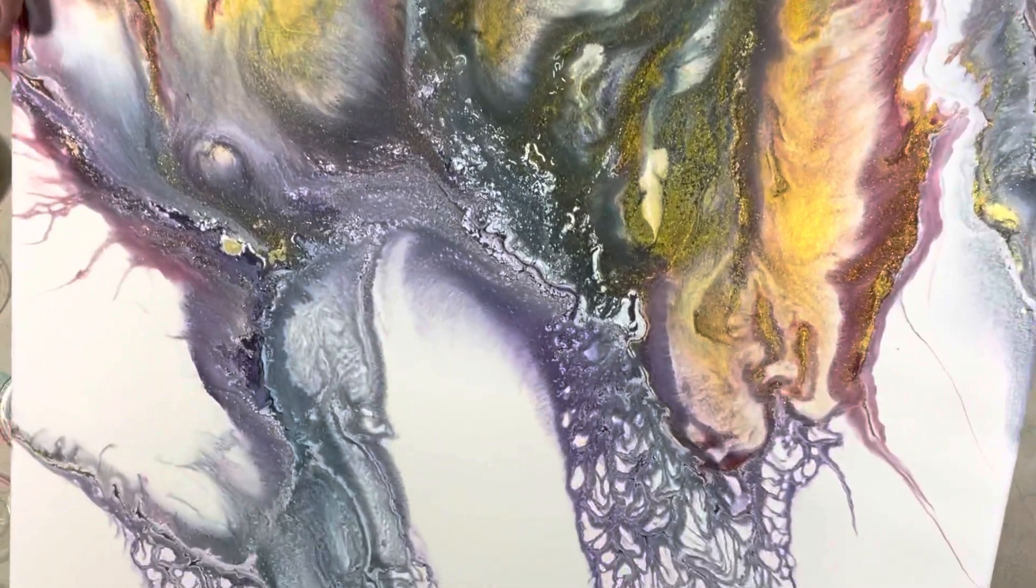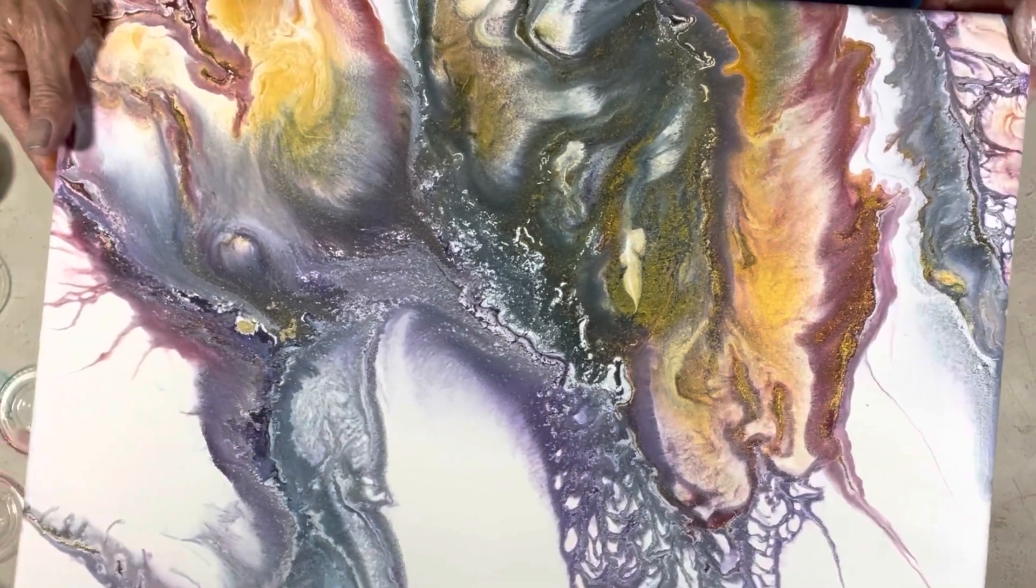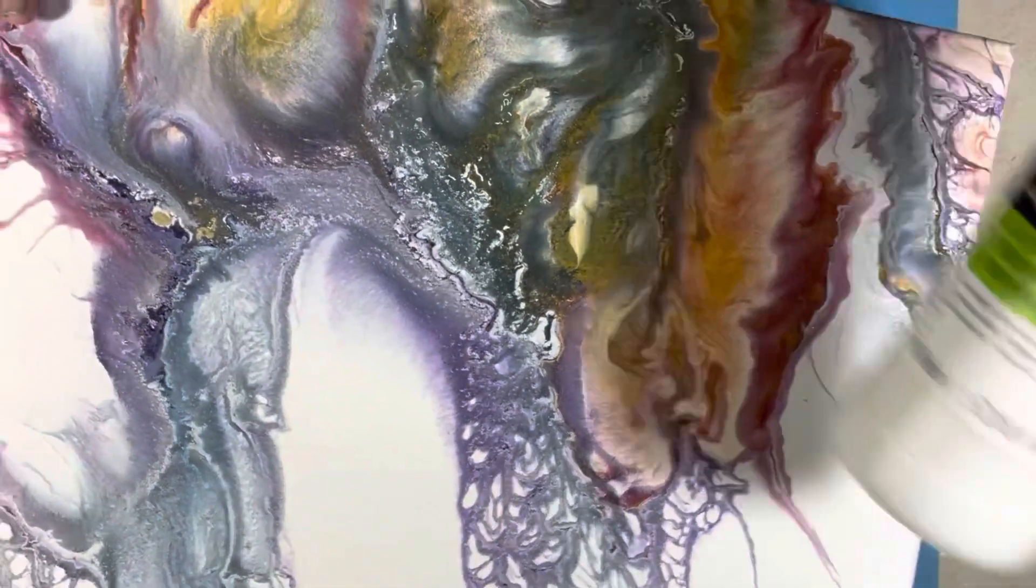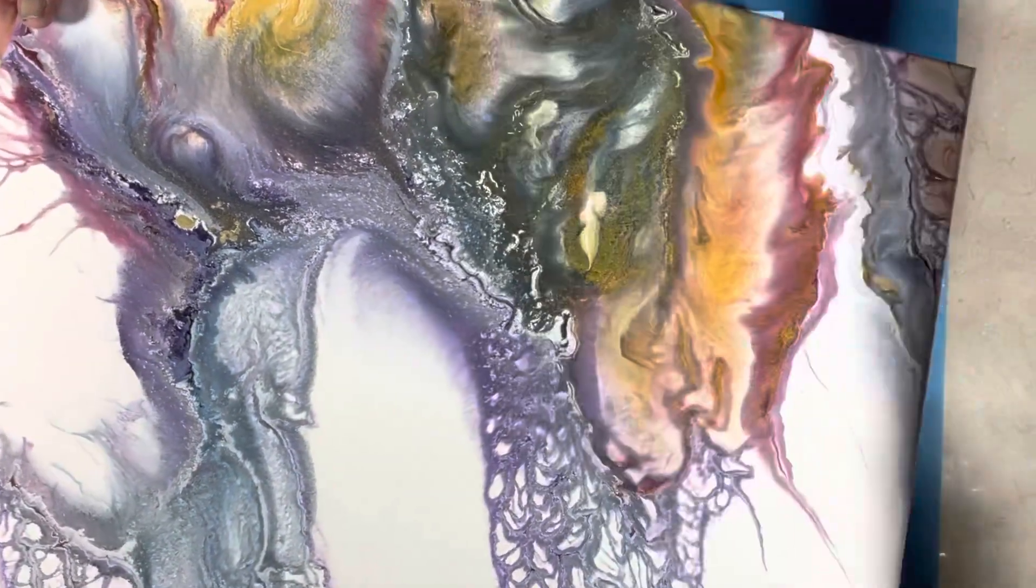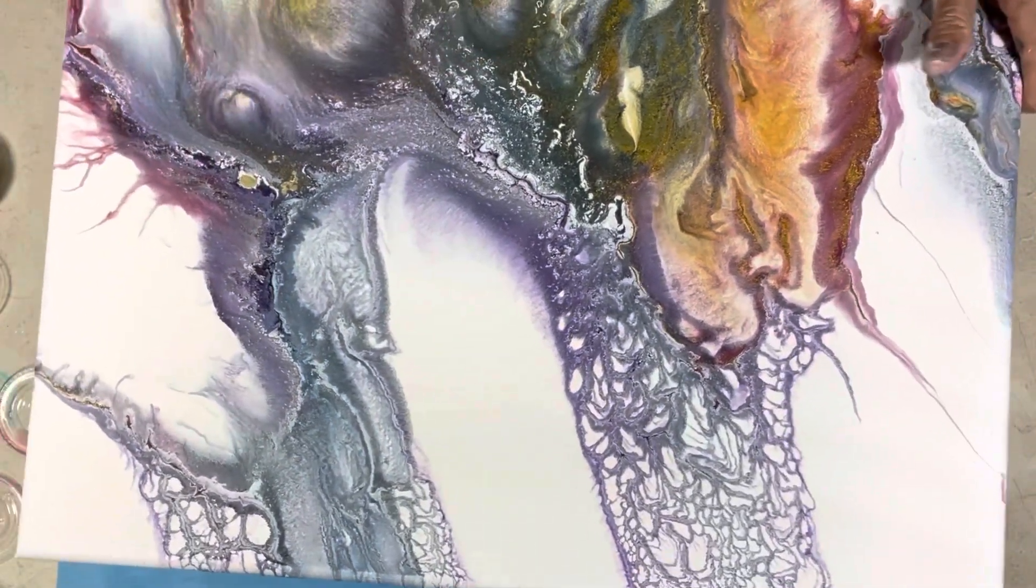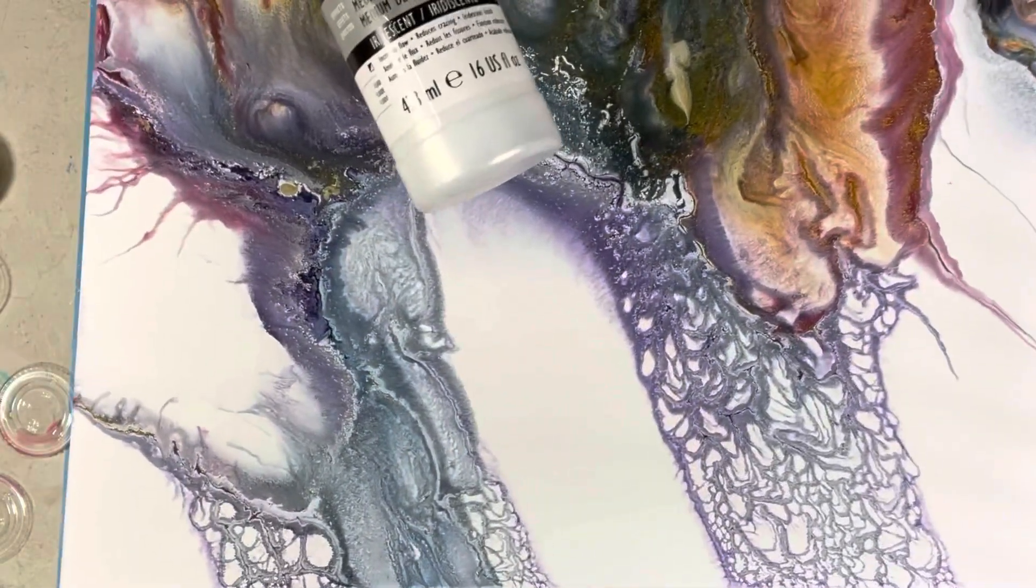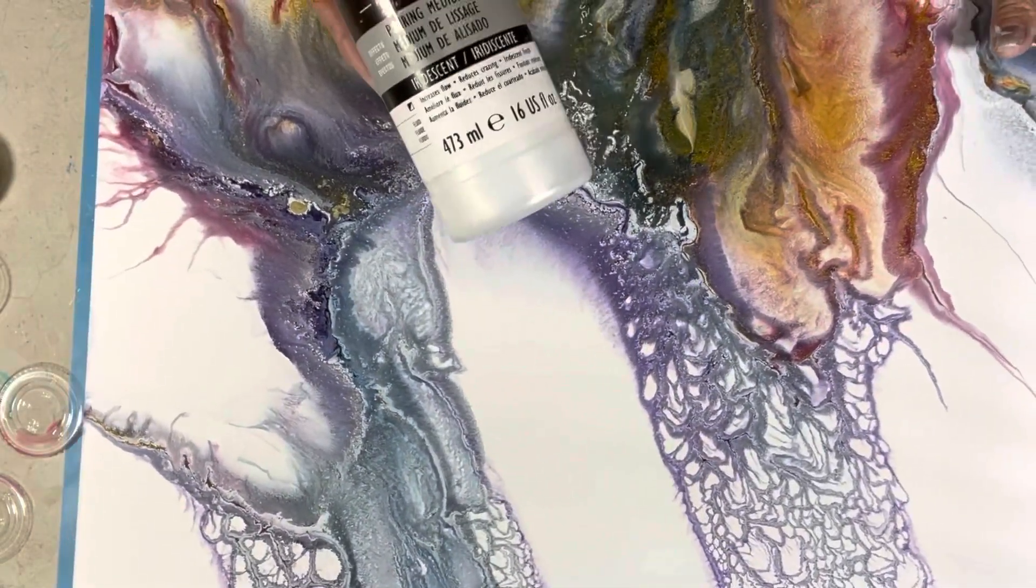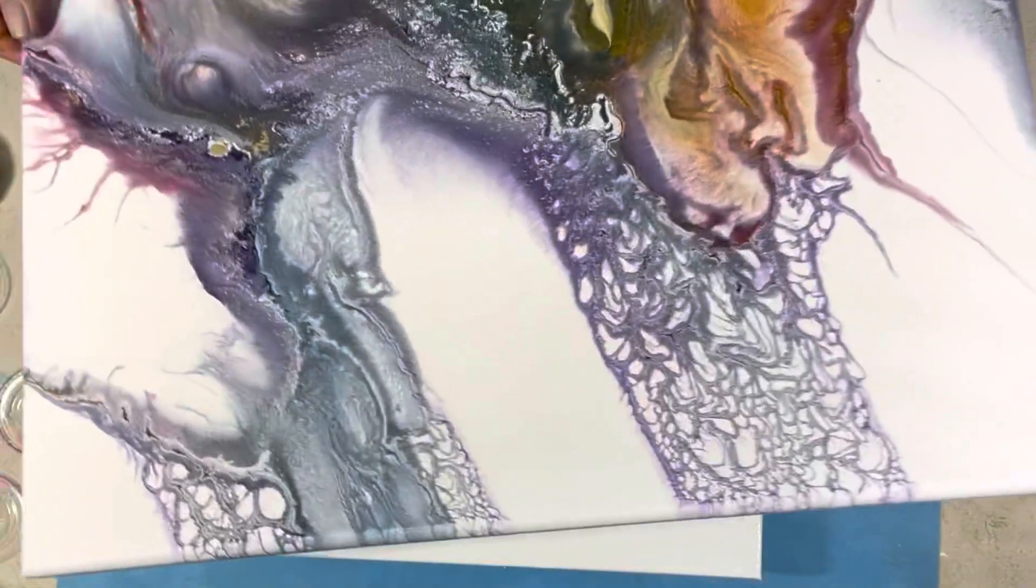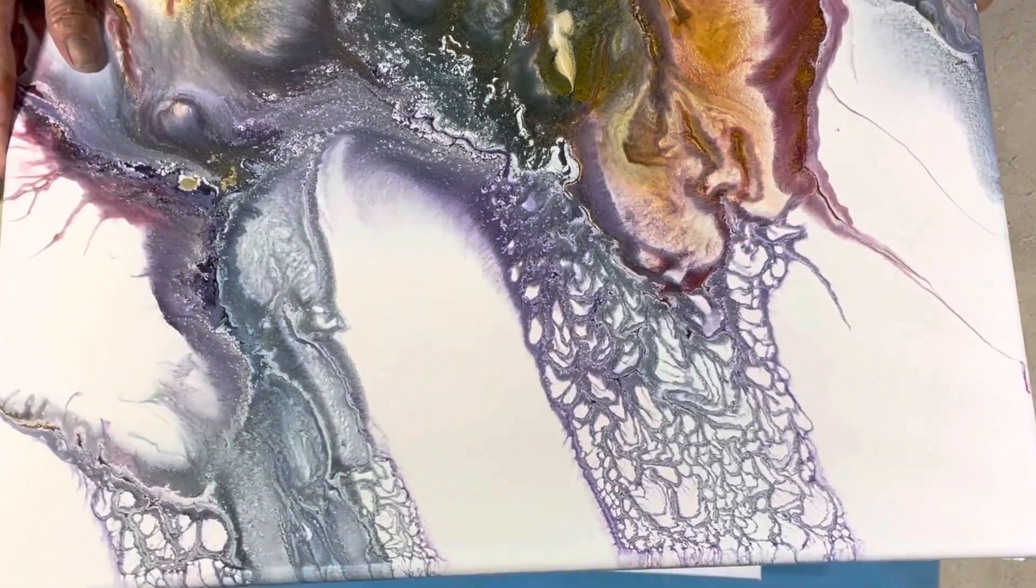This is what happened and I have a feeling I know why. The Liquitex pouring medium I used was the gloss, so I think the gloss has a little bit of varnish in it. Varnish does not go well with water. This evening I used the pouring medium iridescent because I'm out of the regular, so there's not going to be any gloss or varnish.